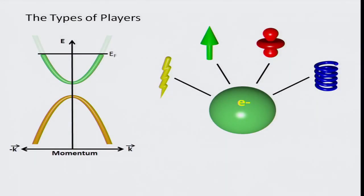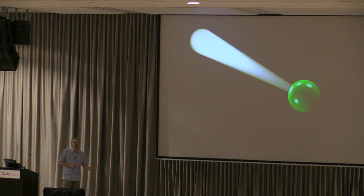So what types of players do we have? We have the band structure, determined by the position and types of atoms in our material. Then we have all these players that actually influence the electron: the charge of the electron, the spin, which orbital it's in, and all of this lattice energy — all of these things can influence how the electron behaves. But there's one other player I haven't talked about yet, which is critical to our story here, and that is light. Electrons can absorb light, and electrons can emit light.